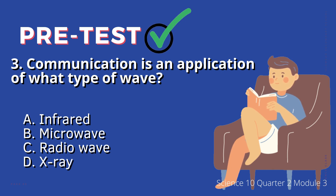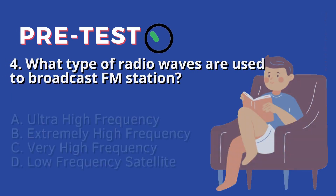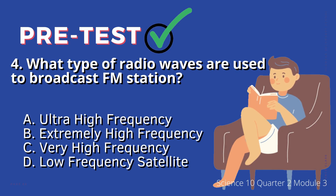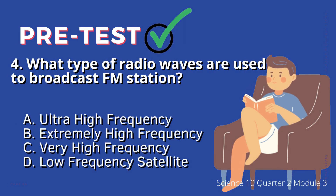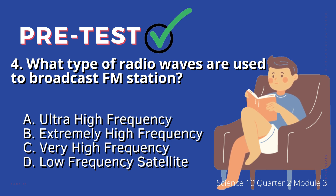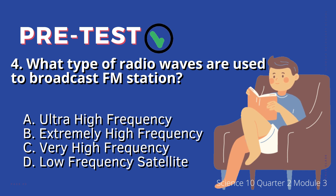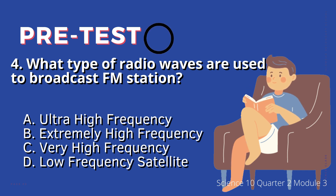4. What type of radio waves are used to broadcast FM stations? A. Ultra-high frequency, B. Extremely high frequency, C. Very high frequency, D. Low frequency satellite.